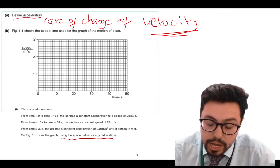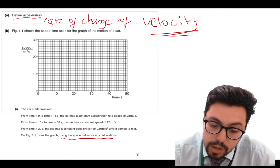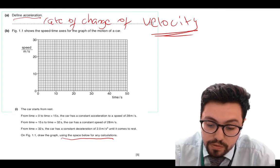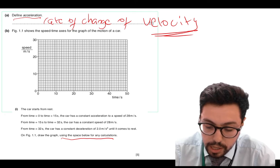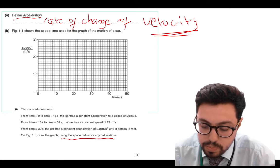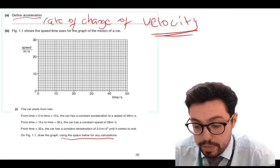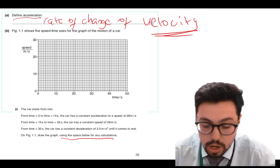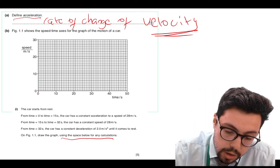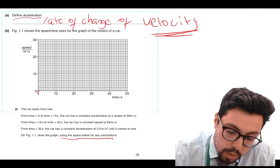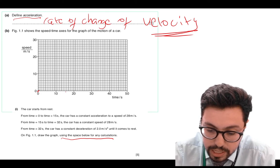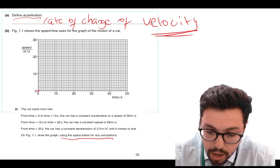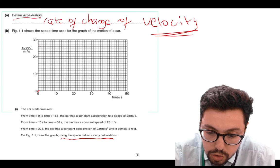To answer this question, it's telling me from time zero to time 15 there is a constant acceleration. That means a straight line to a speed of 28 metres per second. So I'm going to mark those points on my graph — it starts there and then at 15 seconds it moves up to a speed of 28.